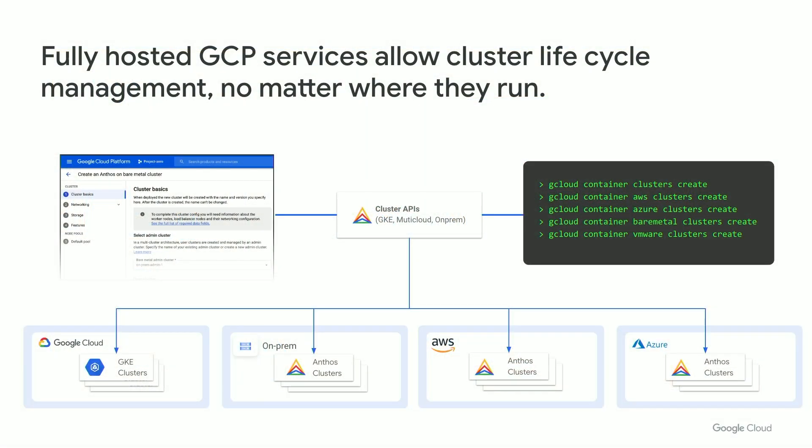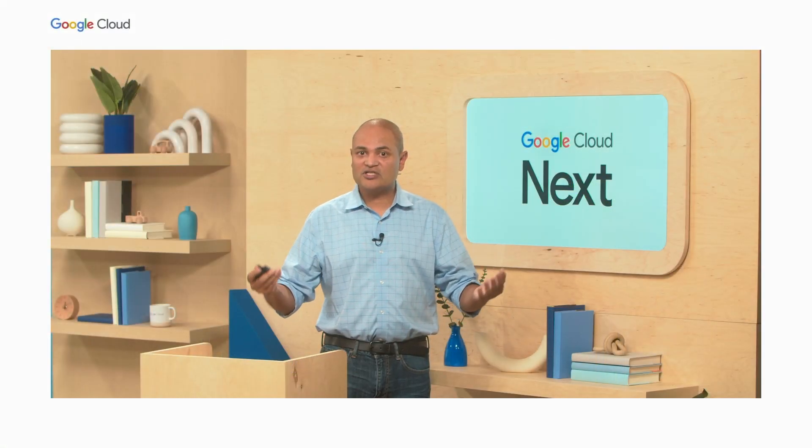Let's start with the first one and do a deeper dive. It's a fully hosted GCP service that allows full cluster lifecycle management no matter where you run — meaning your clusters can be running on GCP, on-prem, on AWS, Azure, or other public cloud. You can manage those clusters directly through GCP, either through our consoles or through G Cloud. It's a fantastic way to automate this and bring more capabilities from an operations perspective.